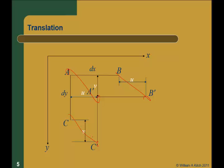I'm throwing a knuckleball, it's just translating. Nothing else is happening. If that's the case, the length of A prime B prime is still dx, and the length of A prime C prime is still dy. There's been no deformation — the ball is still round, hasn't deformed, it's not spinning.